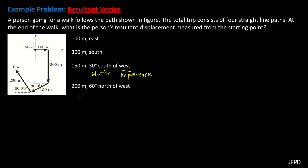For the fourth displacement vector, we have 200 meters at 60 degrees north of west. That is a 60-degree angle measured from the reference of west going to the north direction.